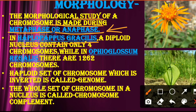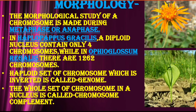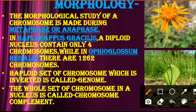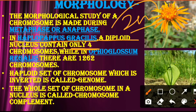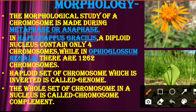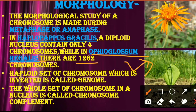In Haplopappus gracilaris, a diploid nucleus contains only 4 chromosomes. While in Ophioglossum regalis — a plant you can see in the right-hand second image — there are 1062 chromosomes, meaning more than 1000 chromosomes are present. This point tells us that different species have different numbers of chromosomes.